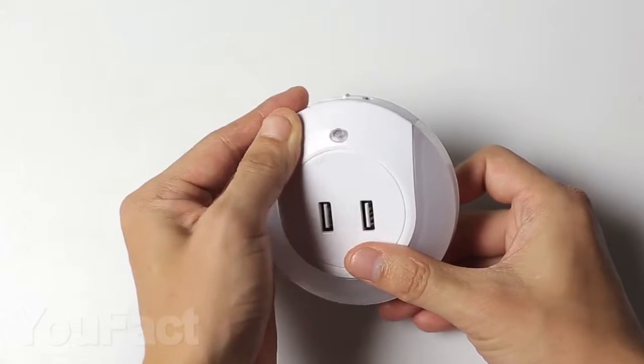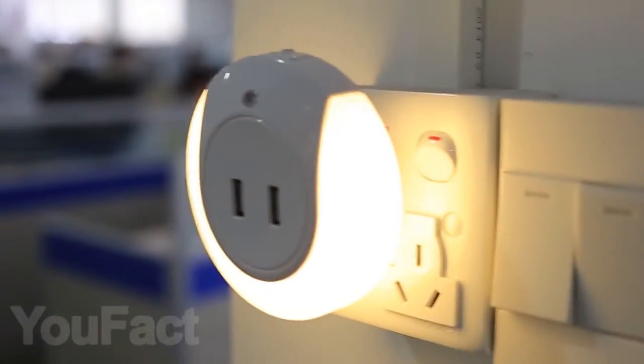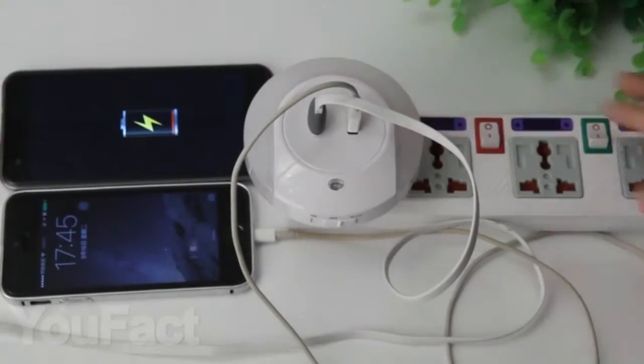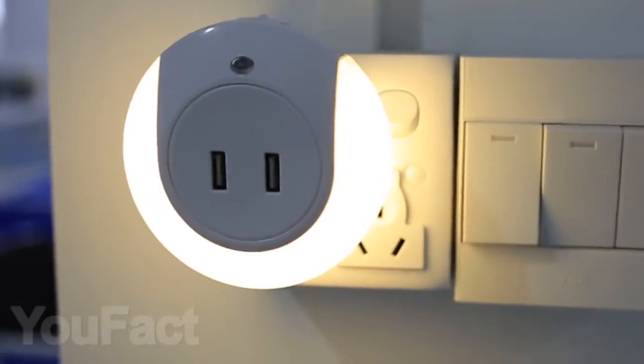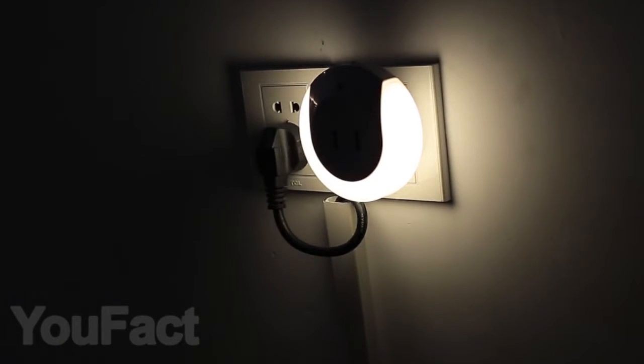If your smartphone can be charged with the help of wired chargers only, then this charger with backlight would be a good option for you, and you can charge two smartphones with the help of this charger at the same time. If desired, the backlight can either be turned off completely or put in a mode when it will turn on when the room becomes dark. It's convenient enough not to look for a charger in the dark, isn't it?